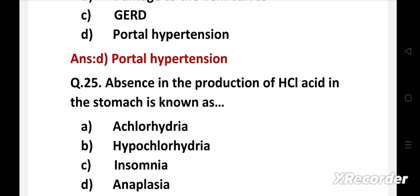Question 25: Absence in the production of HCl acid in the stomach is known as - option A: achlorhydria, B: hypochlorhydria, C: insomnia, D: anaplasia.